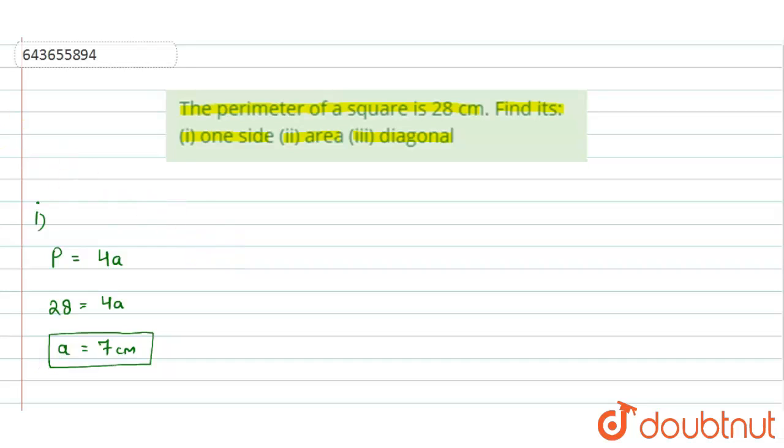Now for the second part, we have to find the area of the square. So area of a square is equal to side squared. Here the side we have already got, which is 7 centimeters. So 7 squared equals 49 centimeter square. The area of this square is 49 centimeter square.